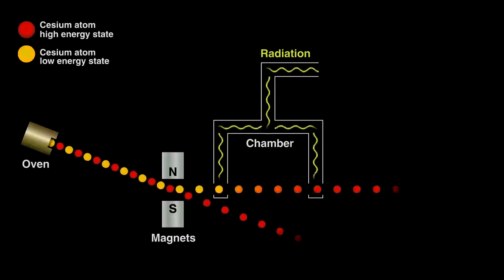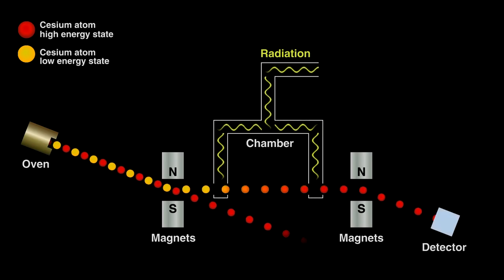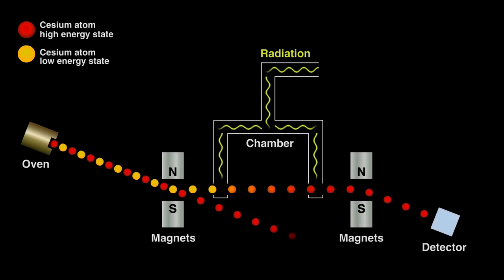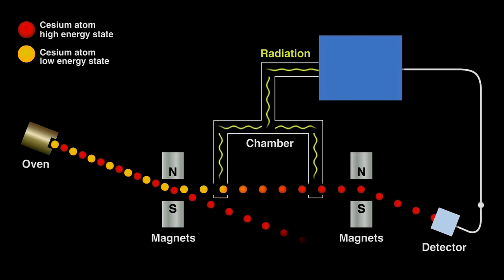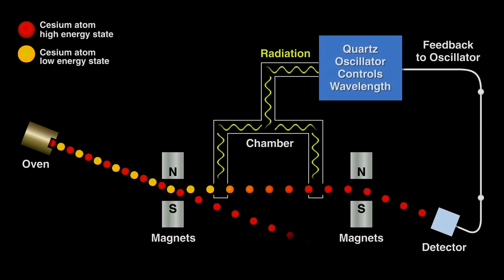As these gaseous ions leave the chamber, they pass through another magnet that directs high energy ions toward a detector, this time discarding any lower energy ones. The detector converts the arriving ions to a current. The trick here is to tie that current from the detector to the quartz oscillator.